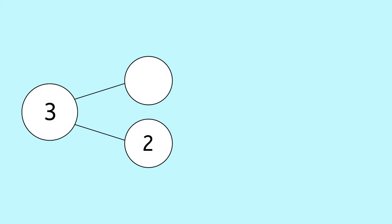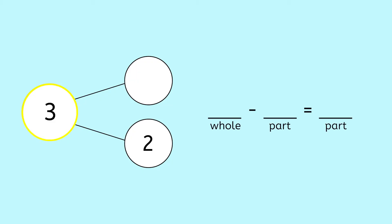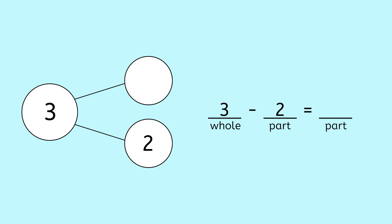Let me show you what I mean. We know our whole is three and one part is two. When we subtract, we always start with the whole, which is the bigger number. So that means three comes first. The only other number we have here is one of the parts, two. To find the other part, we need to take away two from three.